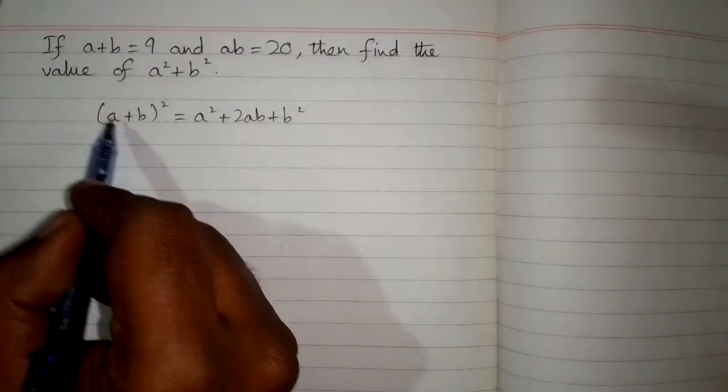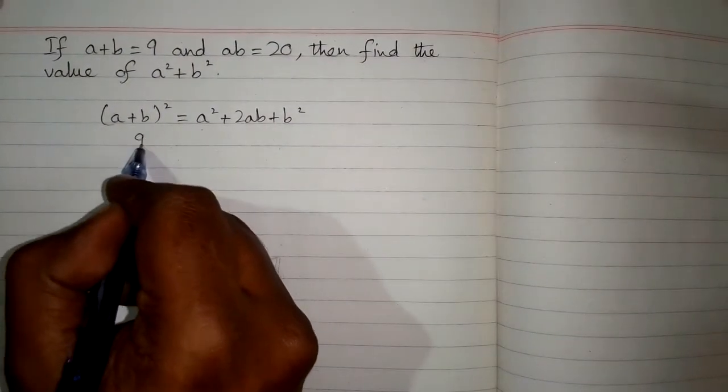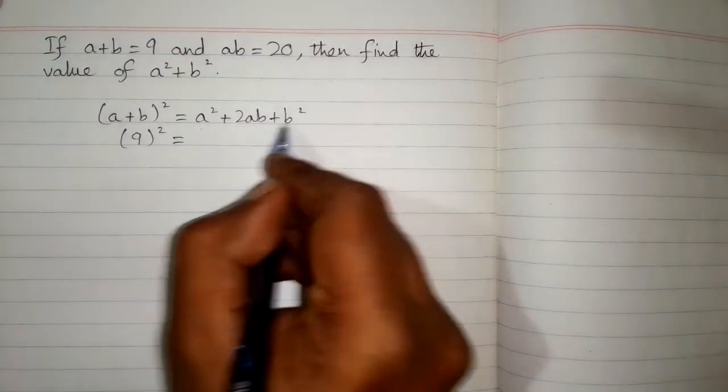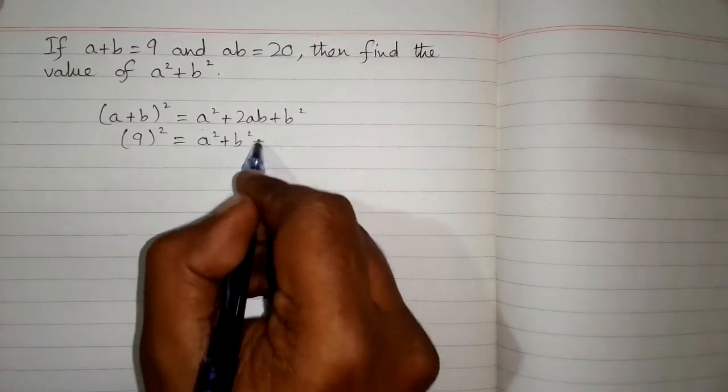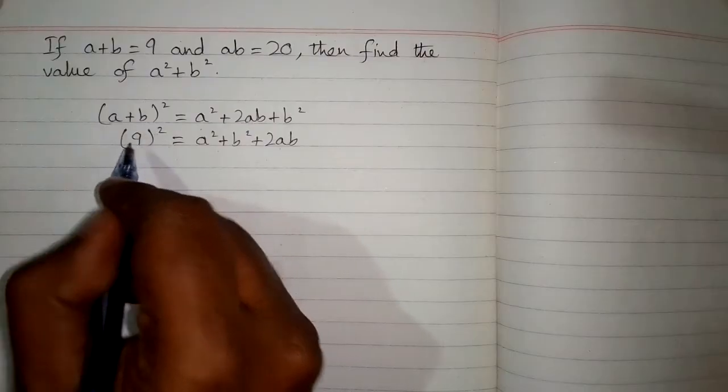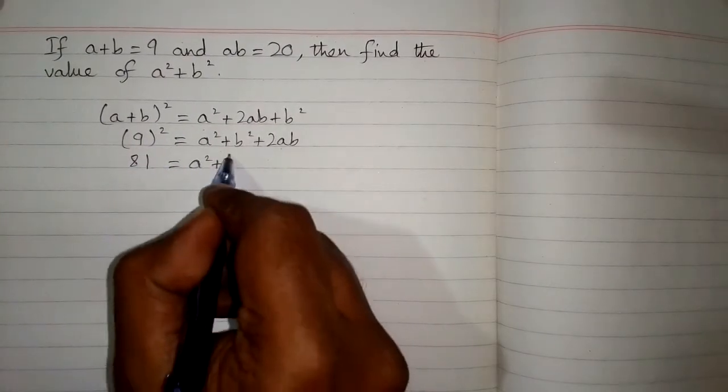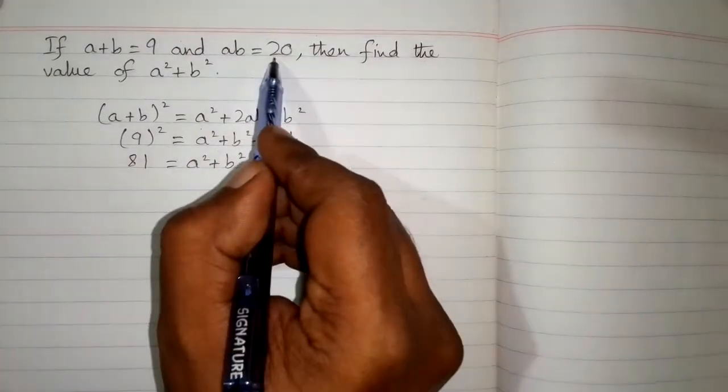Now we can see that the value of a + b is 9, so we can put 9 in place of a + b. Then this can be rearranged as a² + b² + 2ab. Now square of 9 is 81, and then we can put the value of ab which is 20 given in the question, so we will write 20 in place of ab.